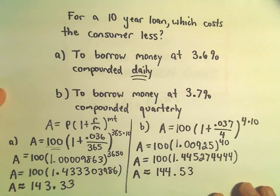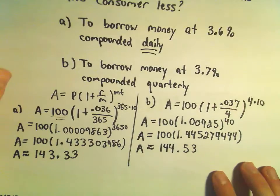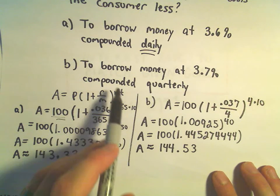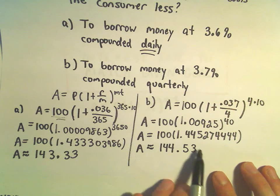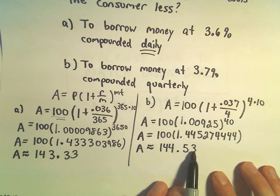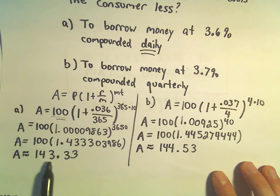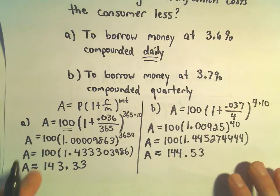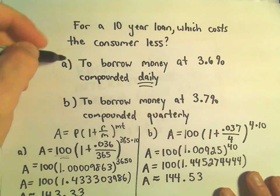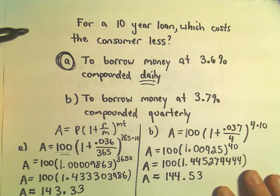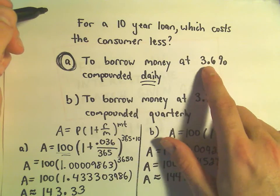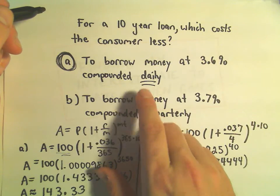Again, both of these were approximate. We did round off a little bit, but it says in Part B, at the end of the loan, you're going to owe $144 and some change, whereas in Part A, you only owed $143 and some change. So to you, the consumer, you would want to take, at least in this case, that lower interest rate that's compounded more frequently.